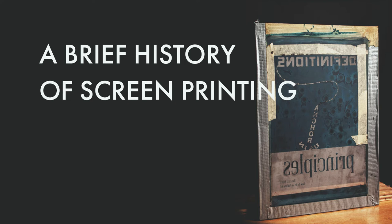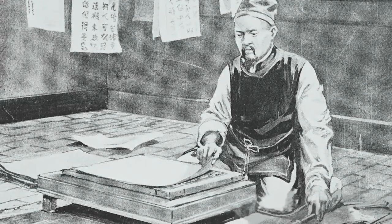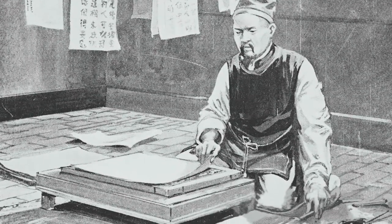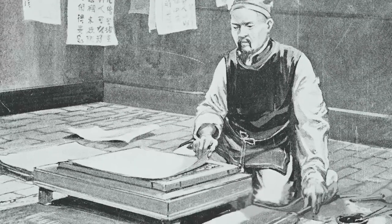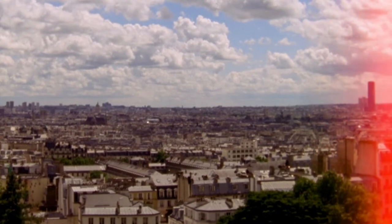Screen printing originated in China around AD 221 to transfer designs onto fabrics. Following this, the Japanese began using simple stenciling techniques as a way to create imagery. At this time, stencils were cut out of paper and the mesh was woven from human hair.